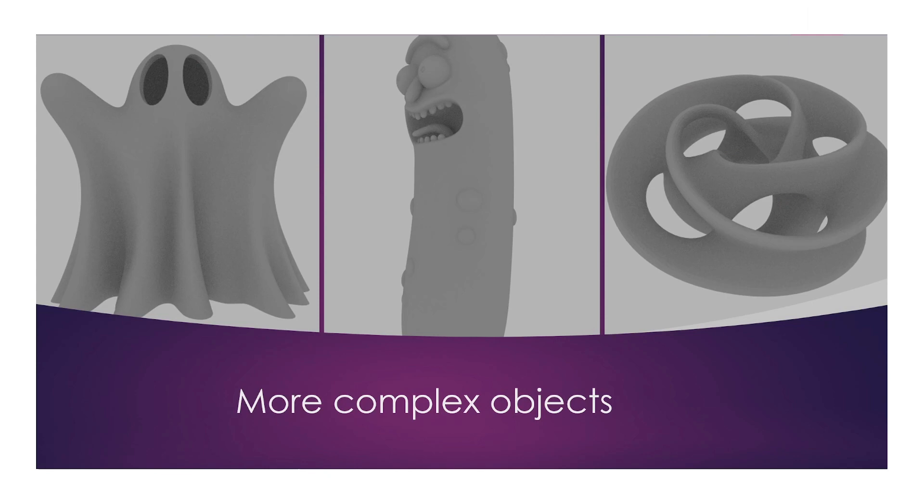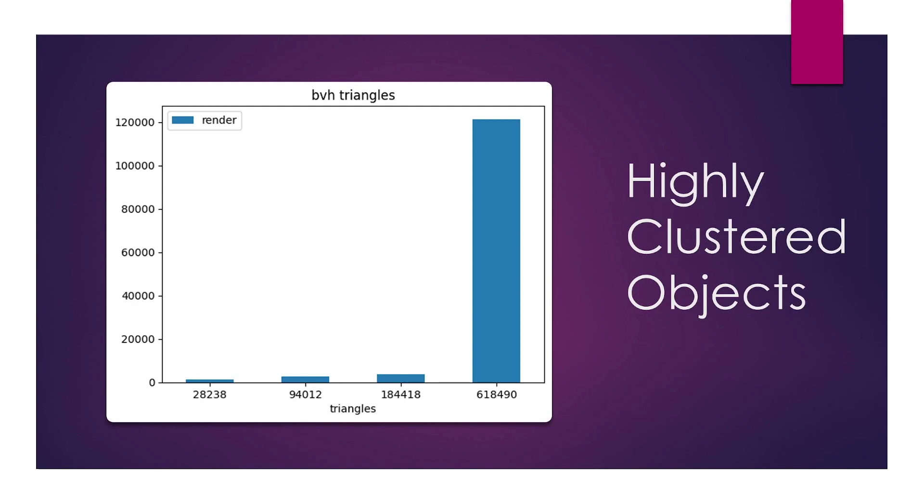So, we grabbed some more complex objects from different websites. In this case, we have a ghost, pickle rick, and a complex kind of torus-twisting-looking object on the right. All of these with increasing triangle counts. You can see some results on our render times here. We have, for 28,000 objects, it's almost instant, and then when we go up to 100,000, it looks like our render time about doubles. By 200,000 triangles, we are only looking at about 1.2 to 1.5 times the render time.